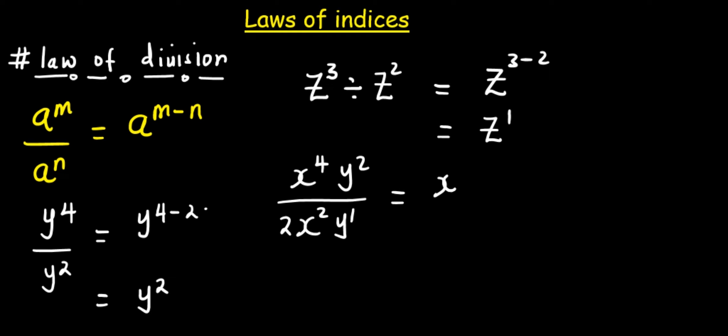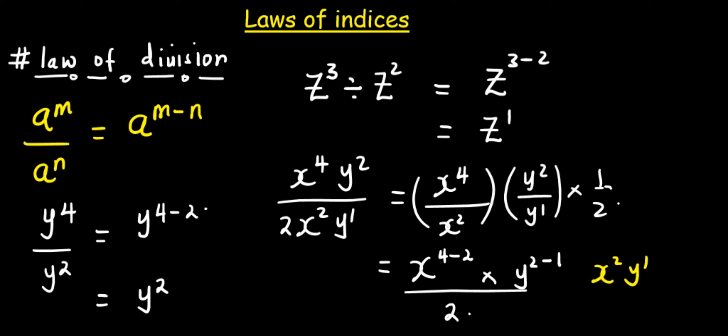Now, this is equal to x raised to power 4 divided by x squared, times y raised to power 2 divided by y to power 1, times one half. Now, this is equal to x raised to power 4 minus 2, divided by 2. So, the final result is x raised to power 2, y raised to power 1, divided by 2.